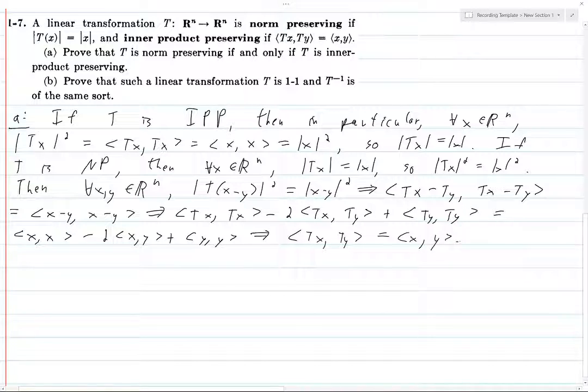What does that leave us with? It leaves us with <Ty,Tx> = <x,y>. So IPP if and only if NP.